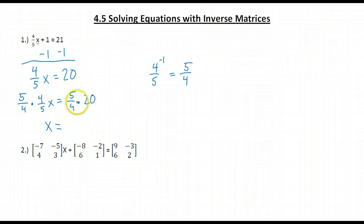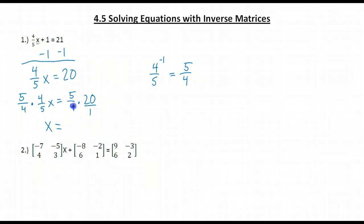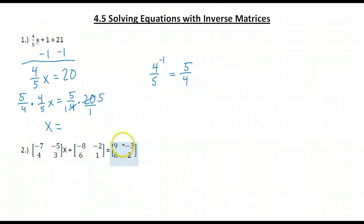And on the right side, I just need to do that math. 5 fourths times 20 is 5 fourths times 20 over 1. I can take this 4 in my denominator and this 20 in my numerator and simplify. 4 goes into 4 one time and 4 goes into 20 five times, so 20 over 4 is 5 over 1. Now I can just take 5 times 5 and get 25, so x equals 25.